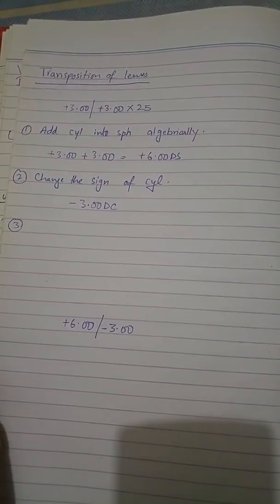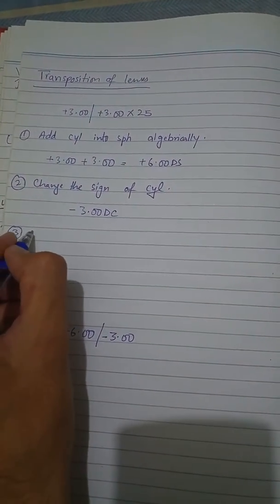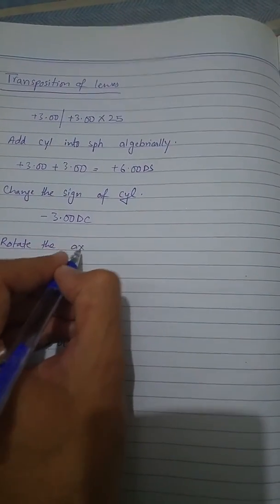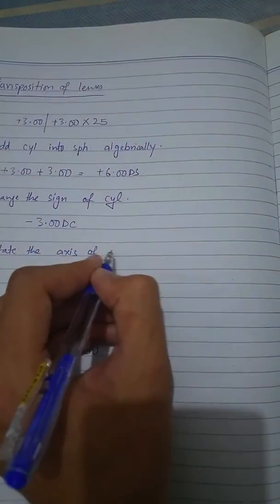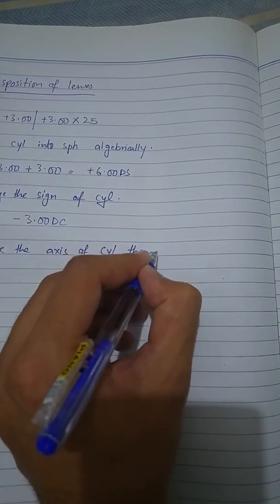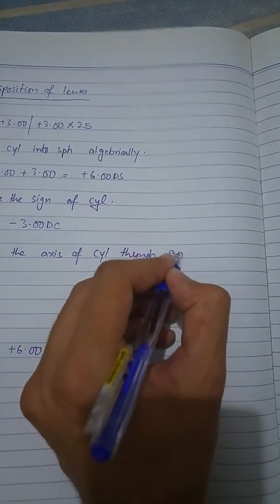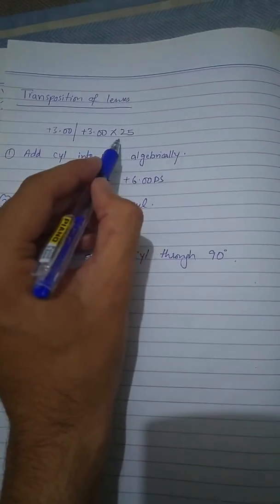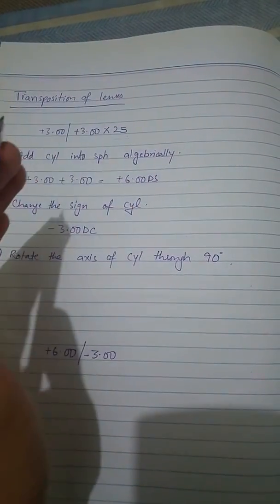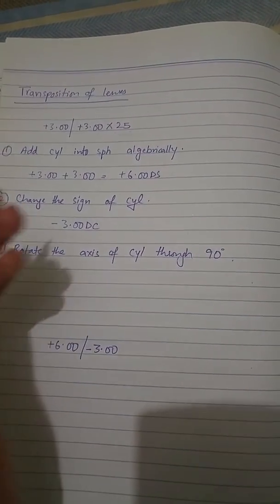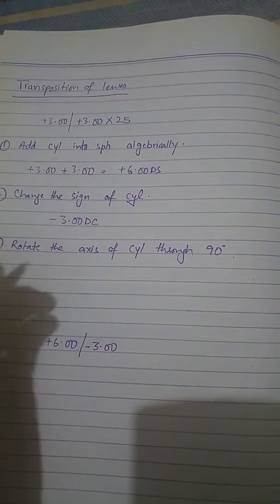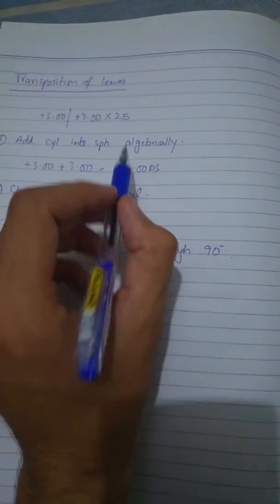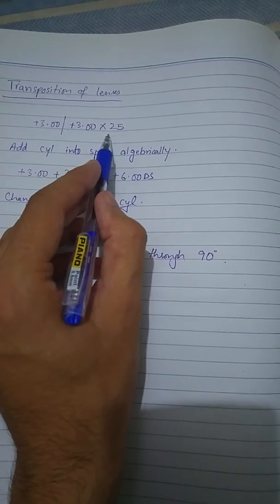The third and last step of transposition is rotate the axis of cylinder through 90 degrees. You must remember: if the original axis in the prescription is equal to 90 or less than 90, we will add 90 degrees. If the original axis is more than 90, we will subtract 90. In this case we have 25, which is less than 90, so we will subtract 90.